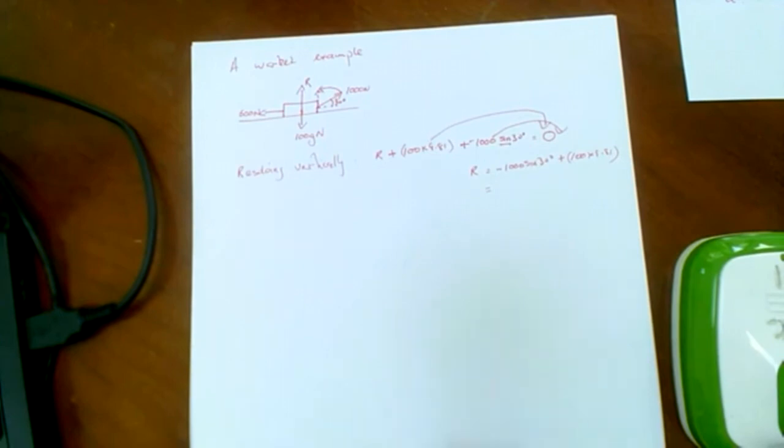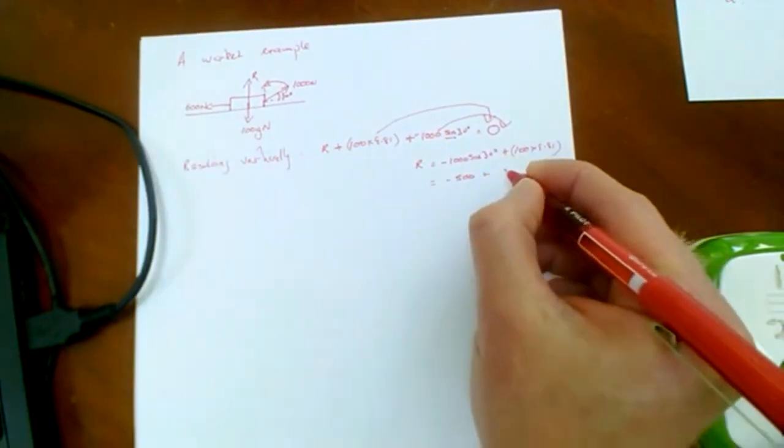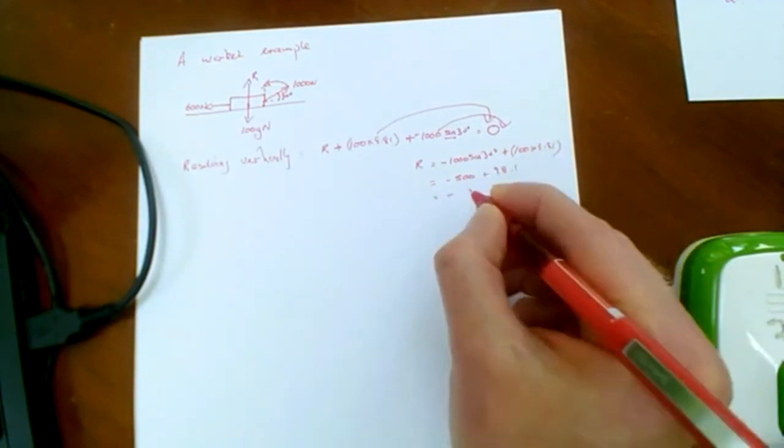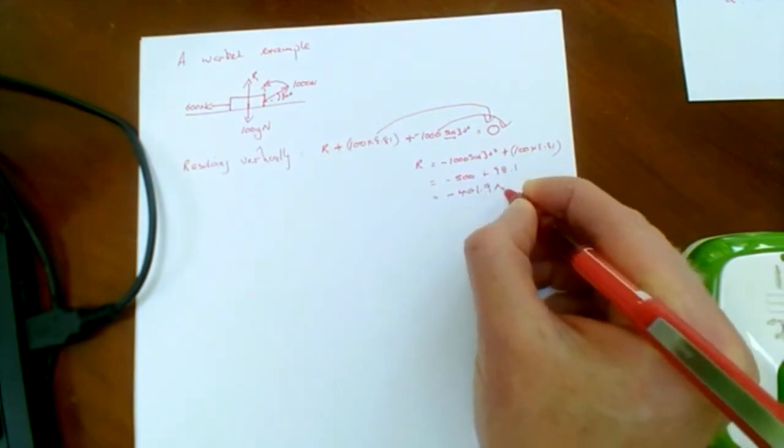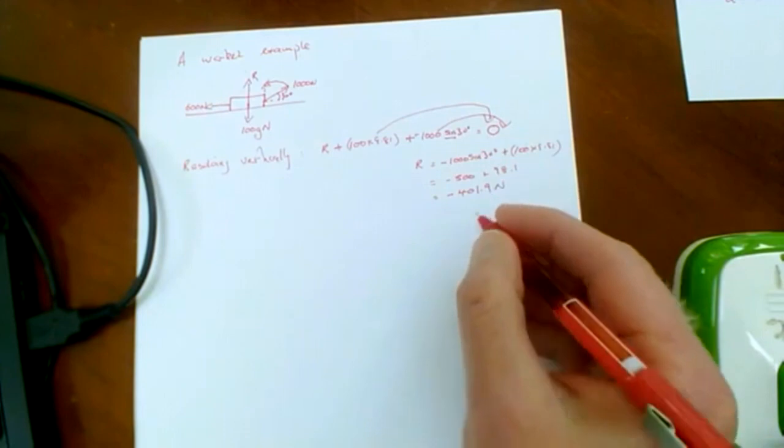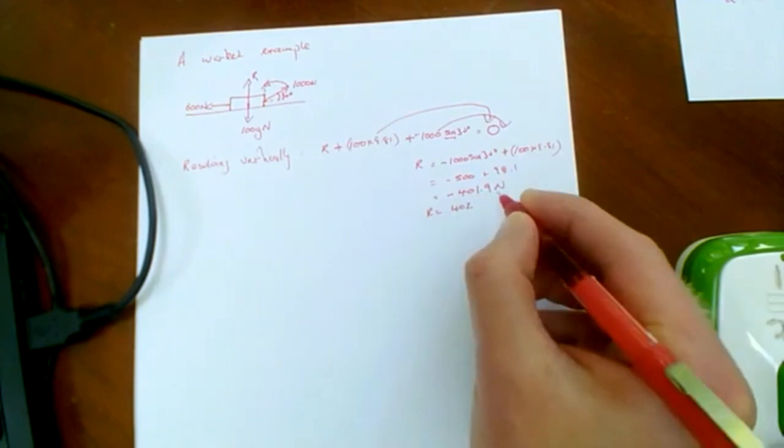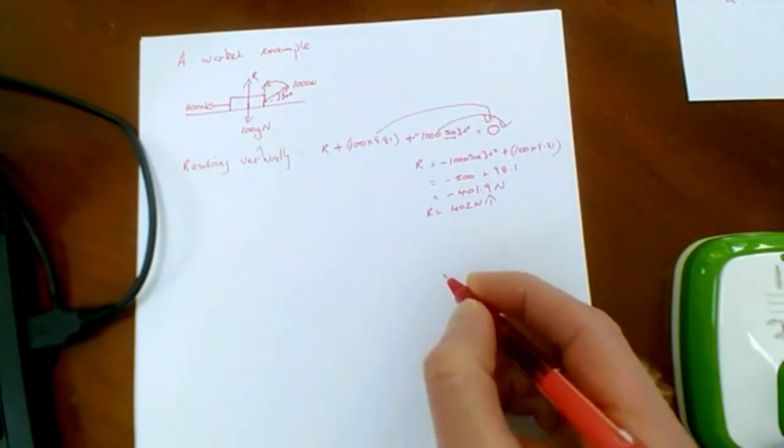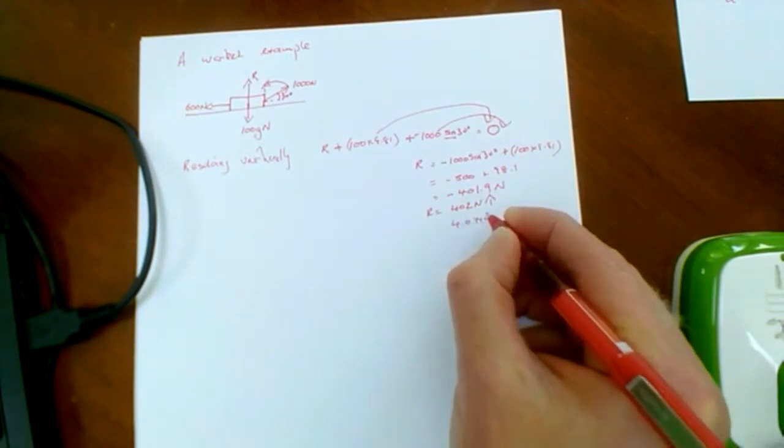Now sine 30 is 0.5, so there's minus 500 plus 981. So there's minus 400 and 1.9 Newtons. And that is of course because we have taken down as positive. So R then is 402 Newtons to 3 sig figs vertically. Or to 2 sig figs, 4.0 times 10 to the 2 Newtons.